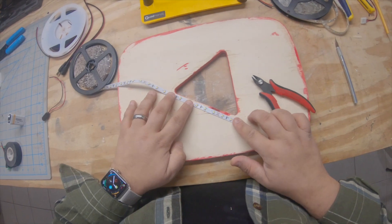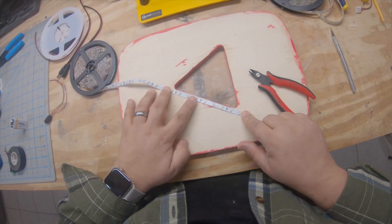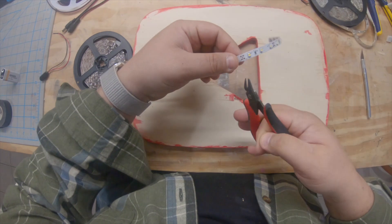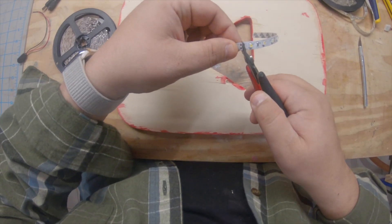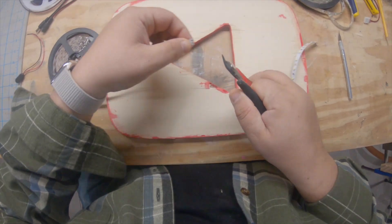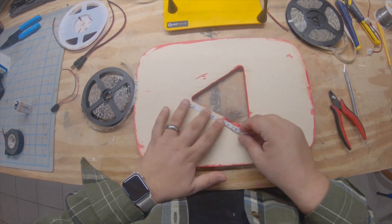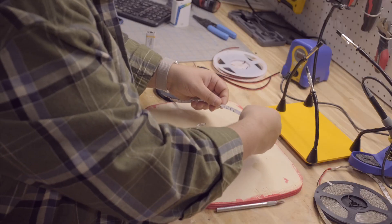I'm gonna start with the inner triangle which is gonna be lit up in white. The white LEDs are not waterproof so those I can just cut super easy.